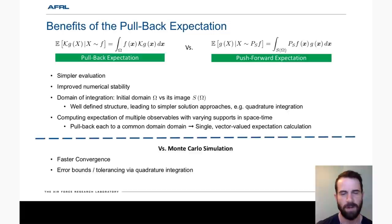Now when we compare the pullback Koopman approach to Monte Carlo, we can show faster convergence rates and we can get free error bounds and tolerancing via quadrature integration. Whereas in Monte Carlo, getting those error bounds can be very expensive. Now one of the downfalls to the Koopman approach is it assumes no process noise.